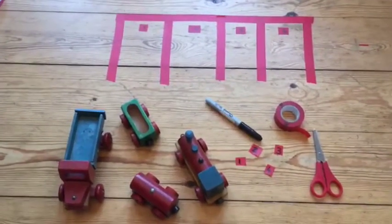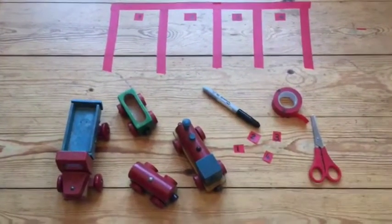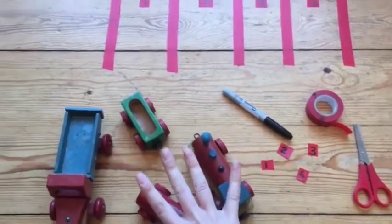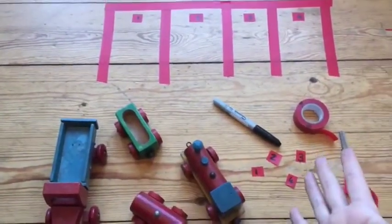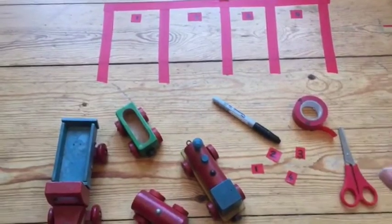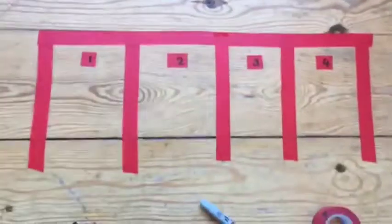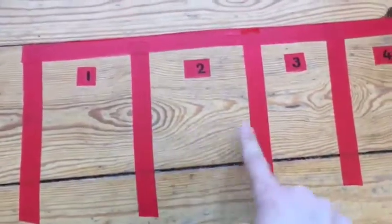What I've done is I've written numbers one to four, that's all the vehicles I have, but I'm sure that your children might want to count further on. You might have more vehicles. You can even do this with matching letters as well. I've got my numbered car park spaces and now all I need to do is put the numbers on our vehicles.